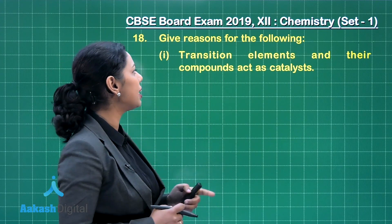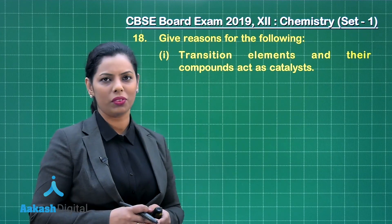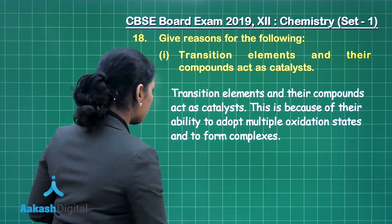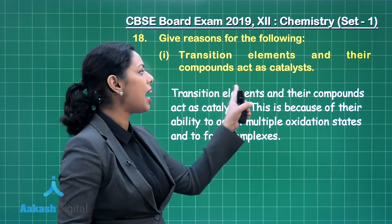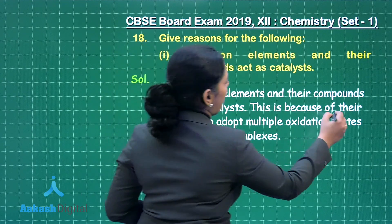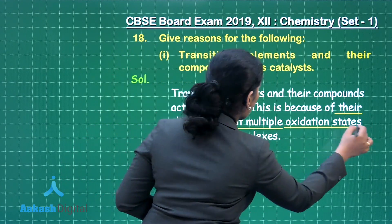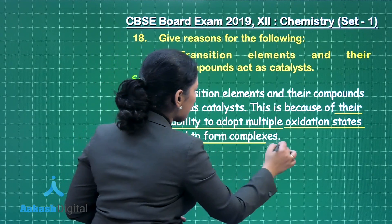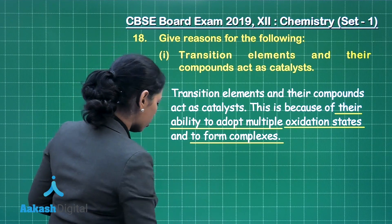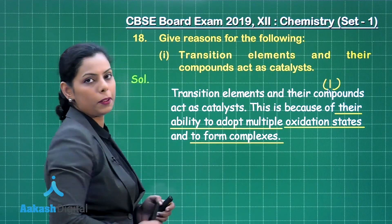Transition elements and their compounds act as catalyst — you have to give the reason. You can write that transition elements and their compounds act as catalyst because they have the ability to adopt multiple oxidation states, and due to that they form complexes. By writing this, you will obtain one mark for this part.